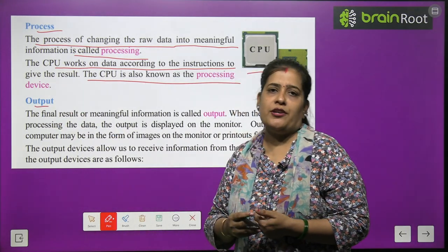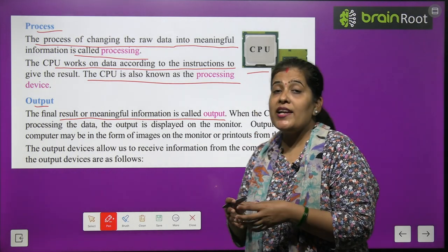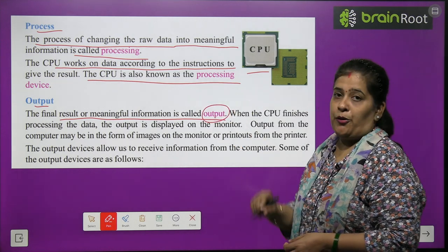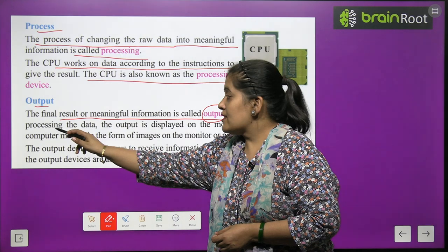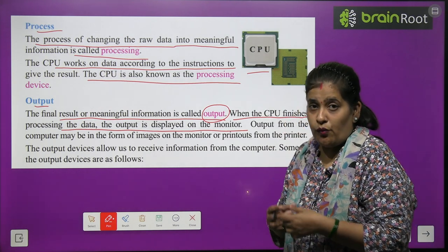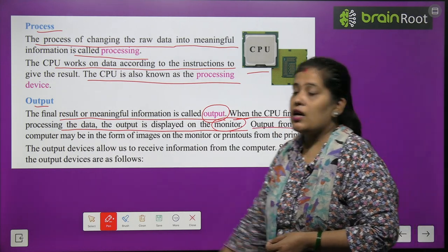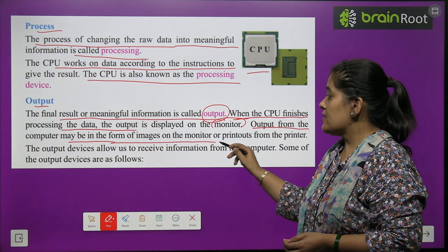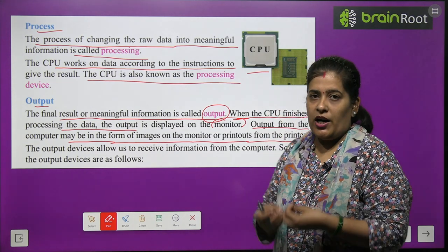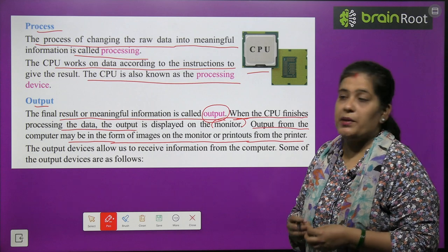Now, output. The final result or meaningful information is called output. When the CPU finishes processing the data, the output is displayed on the monitor. Output from the computer may be in the form of images on the monitor or printout from the printer. Output हमें या तो monitor पे देखने को मिलेगा किसी word, figure, या picture के form में, otherwise पेपर पर जो हम print out से print निकालते हैं.